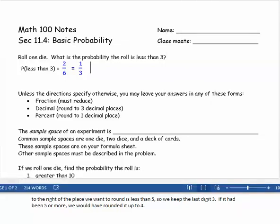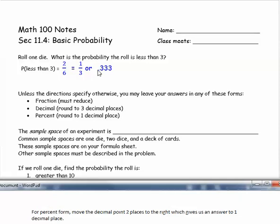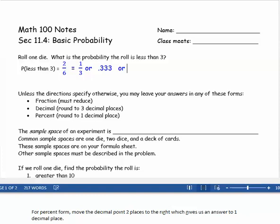In this case though, it's going to round to .333. You don't need to leave both forms, just one or the other. So it's this one or this one, you don't have to say both. If you want percent form, then you move the decimal point two places to the right, which will give you a percent answer to one decimal place. So 33.3% would be the third alternative.